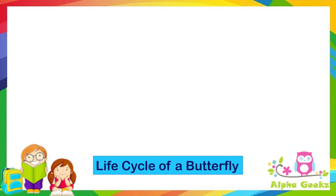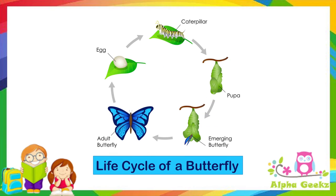Now let's look at the life cycle of a butterfly. A butterfly lays eggs on leaves. The young ones, called larvae, hatch out of the eggs and are called caterpillars. Caterpillars eat leaves and grow fast. The caterpillar then makes a cocoon around itself; at this stage the young one is called a pupa and stops feeding. The caterpillar keeps changing inside the cocoon, and after the pupa changes into a butterfly, it emerges out of the cocoon.